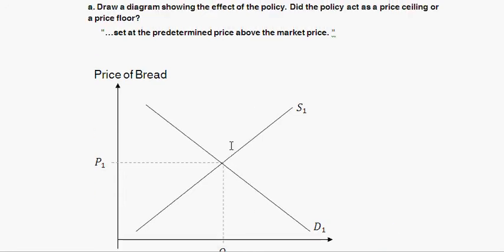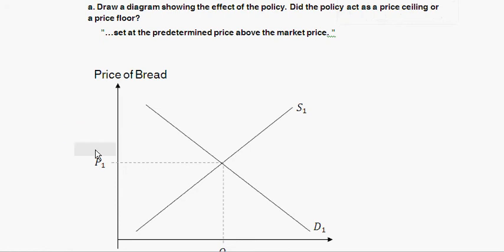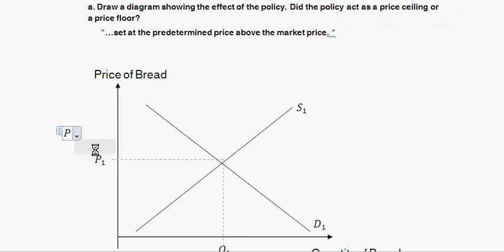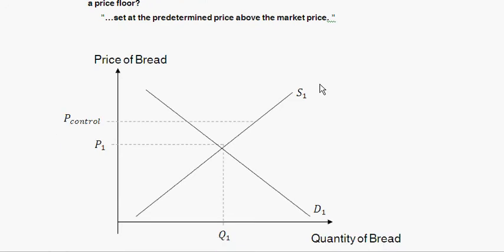Now let's add in the price control. We're told the price is set at a predetermined price above the market price. So we add a new price value above P1. The price control is somewhere above the market price — we don't know exactly where — but it is set above that equilibrium.